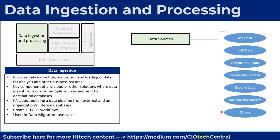Data ingestion and processing is also used in data migration use cases, where data needs to be migrated from one platform or source to another. One example of a tool used in these cases is Apache Flume, which is used for data ingestion. Using Apache Flume, one can take large amounts of data from multiple sources, aggregate it, and move it to destination databases.